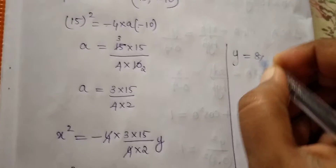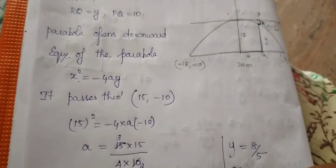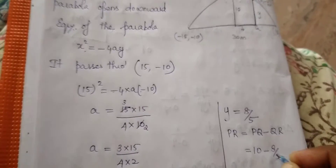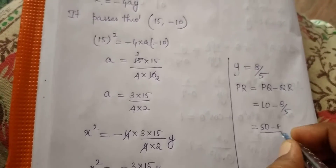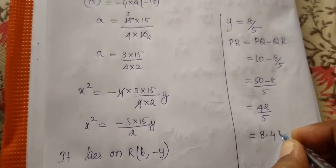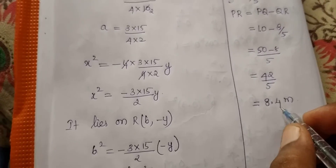We found y = 8/5. But what we need to find is PR. From the figure, PR = PQ − QR. QR is our y, so PR = 10 − 8/5. Taking LCM: (50 − 8)/5 = 42/5. Converting to decimal: 42/5 = 8.4 meters. Therefore, the height of the arch at 6 meters from the center is 8.4 meters.